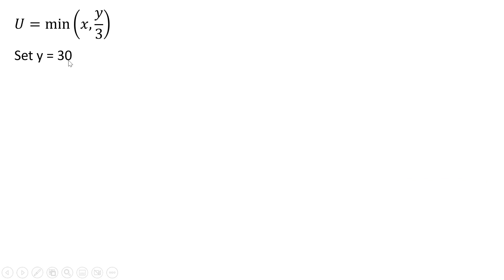Here's our utility function. And again, we're told that y equals 30. So for y, I'll plug in 30. And 30 divided by 3 becomes 10. So here we have utility is the minimum of x or 10. So it makes sense for x to equal 10. Here's why.